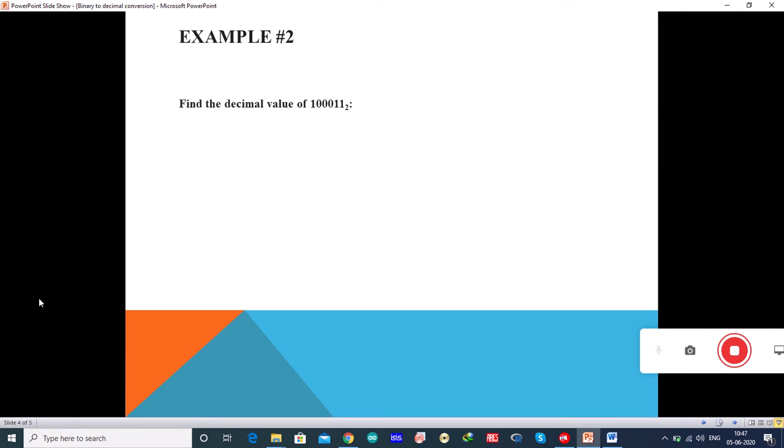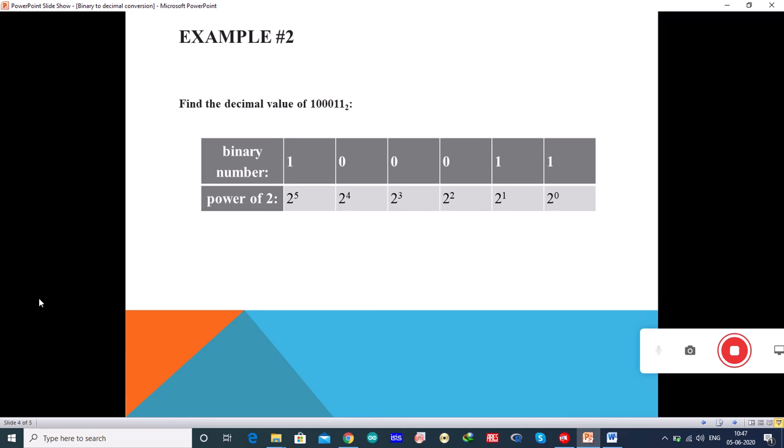Let us see one more example. The same way you can write powers of 2 and these are the places of binary number. This can be written as 1 into 2 power 5, 0 into 2 power 4, 0 into 2 power 3, 0 into 2 power 2, 1 into 2 power 1 and 1 into 2 power 0. So this is 32 plus 2, 34 plus 1, 35.